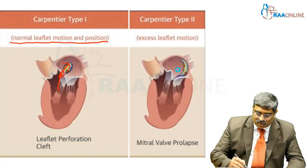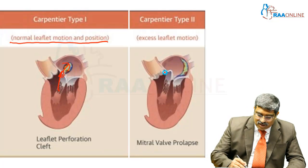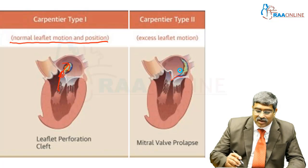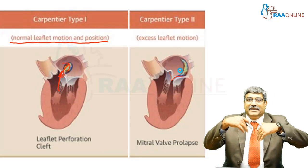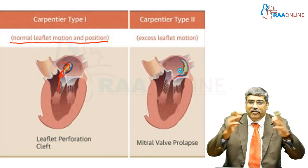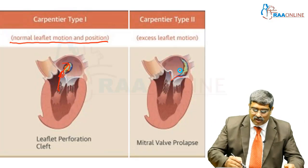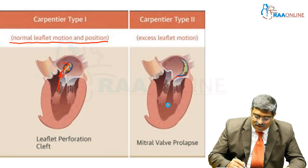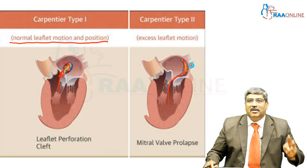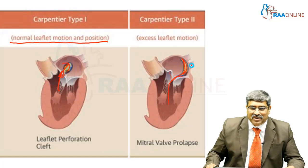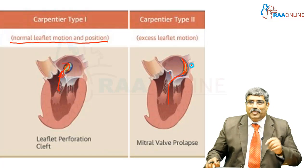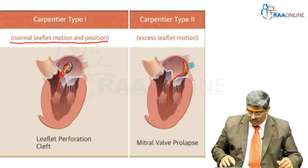In Carpentier Type 2, the position may be normal but the motion is abnormal. There is excess leaflet motion, resulting in an eccentric jet, which occurs with mitral valve prolapse. This is Carpentier Type 2.